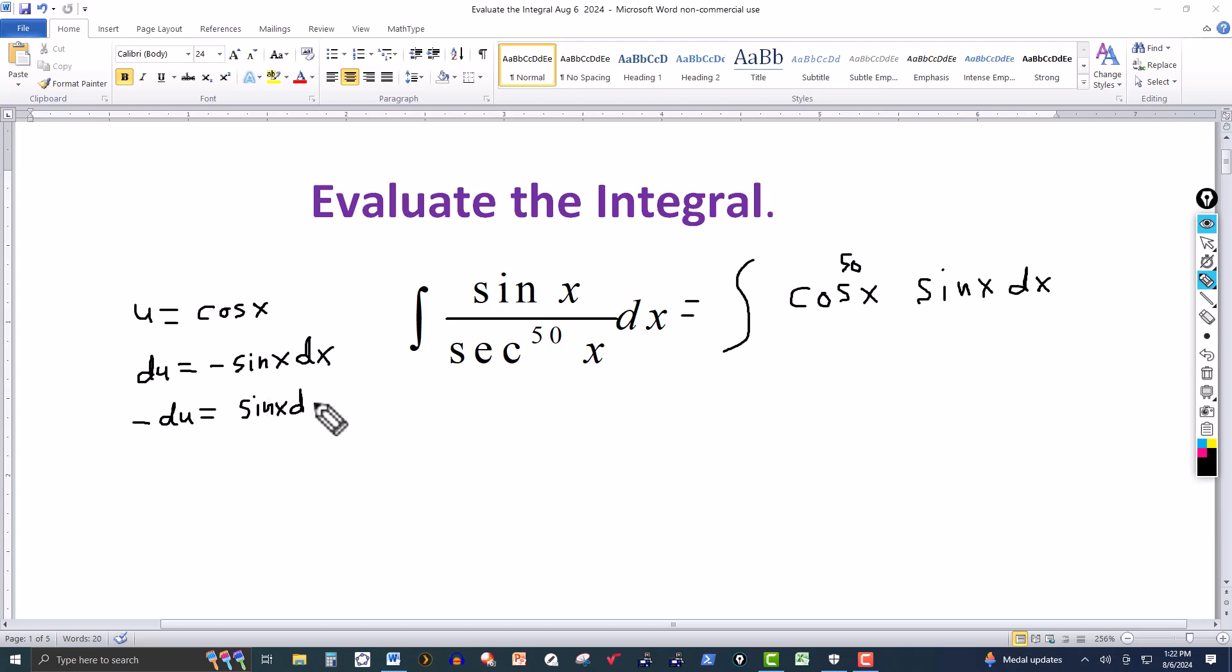And then we transform this integral into one involving the variable u. So this would be the integral of u to the 50th, and sine of x dx over here, that's your minus du. I could put the minus either outside the integral or inside, doesn't really matter.